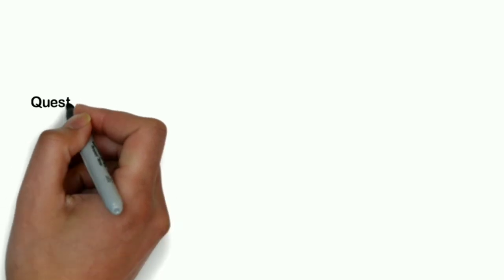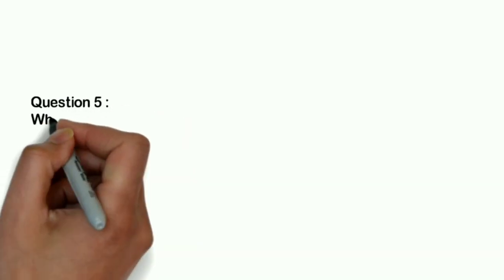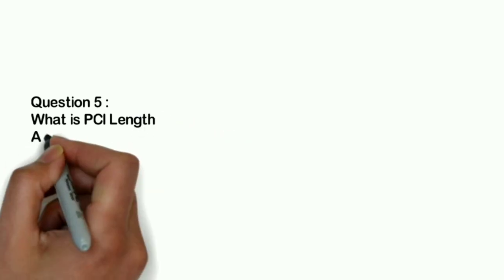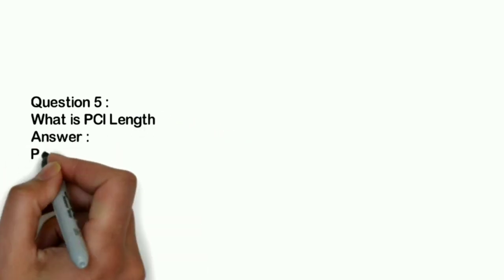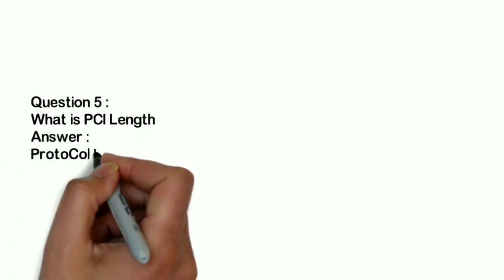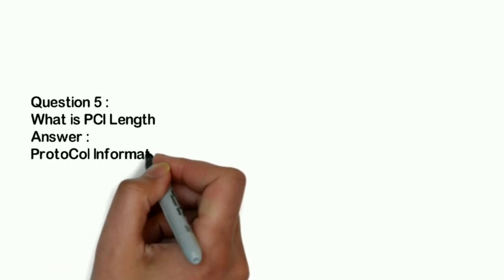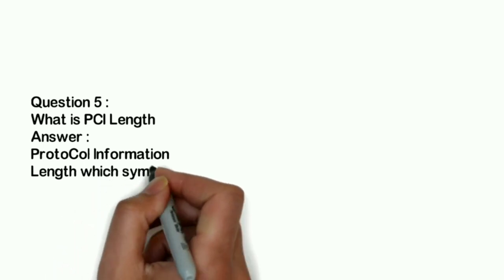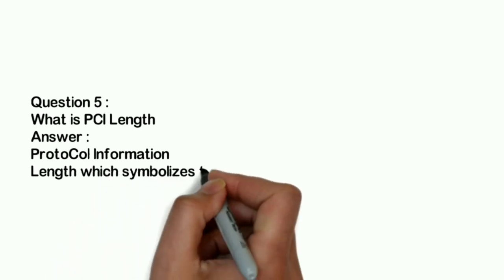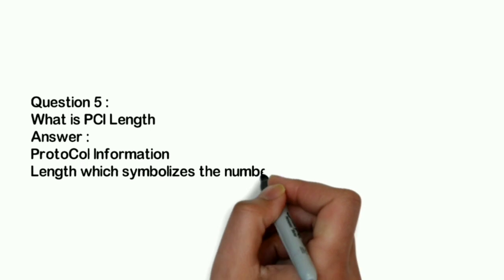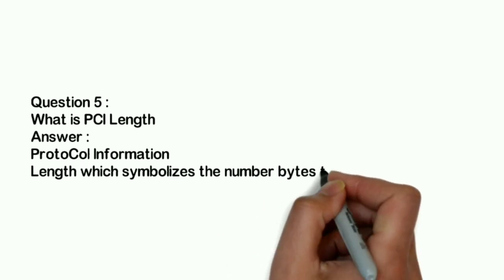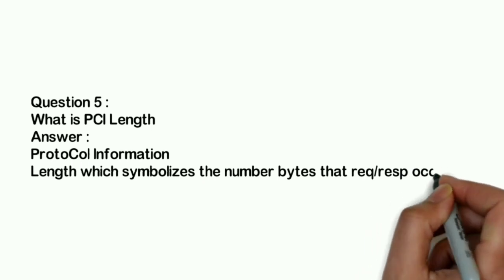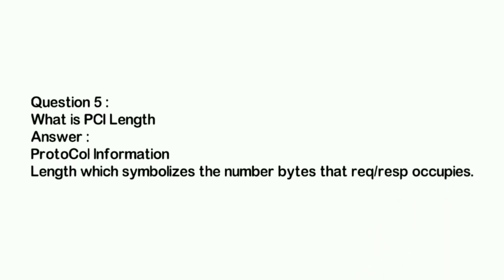Question five is the final question of our session: What is PCI length? Protocol Control Information - it defines the number of bytes present in the frame. The length symbolizes the number of bytes present in the response or request, whatever it may be. Here you can take control - whatever you know, you can put in your resume or share that you know it.